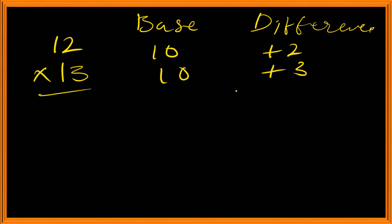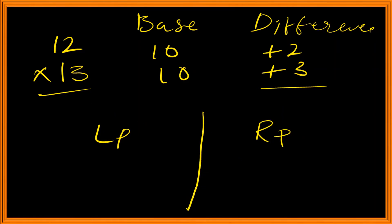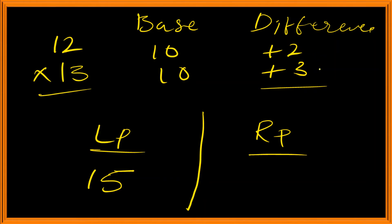We have two parts: one is the left part and another is the right part. For the left part, we add 12 plus 3, or 13 plus 2, which equals 15. For the right part, 2 multiplied by 3 equals 6. So we get the answer 156.